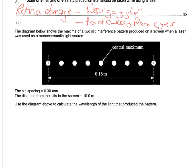Alright, so we've now got a diagram of an interference pattern produced by a double slit, and we've got slit spacing of 0.30, distance from the slit to the screen of 10, and we want to calculate the wavelength. This is your double slit equation, so lambda equals w d over s. If we want to calculate wavelength, we'll need a rearrangement of that, so it will be w s over d.